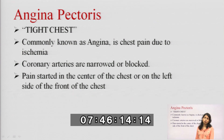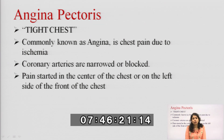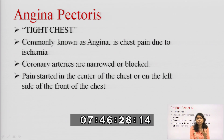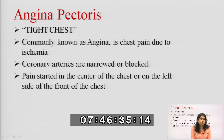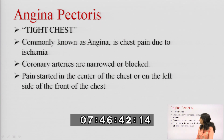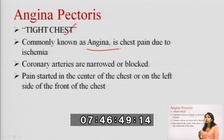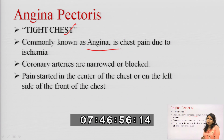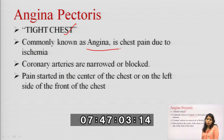Angina pectoris: the demand of the body is increased, and because of cholesterol deposition, proper blood supply through the coronary artery is reduced. This causes sudden pain in the chest — called angina. There is tightness of the chest because sufficient oxygen is not supplied. Coronary arteries are narrowed or blocked. The pain starts in the center of the chest or on the left side of the front of the chest, and it ultimately leads to angina.